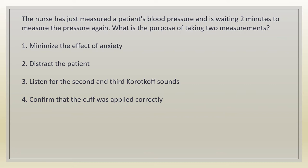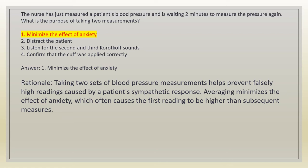The nurse has just measured a patient's blood pressure and is waiting two minutes to measure the pressure again. What is the purpose of taking two measurements? 1. Minimize the effect of anxiety. 2. Distract the patient. 3. Listen for the second and third Korotkoff sounds. 4. Confirm that the cuff was applied correctly. Answer: 1. Minimize the effect of anxiety. Rationale: taking two sets of blood pressure measurements helps prevent falsely high readings caused by a patient's sympathetic response. Averaging minimizes the effect of anxiety, which often causes the first reading to be higher than subsequent measures.